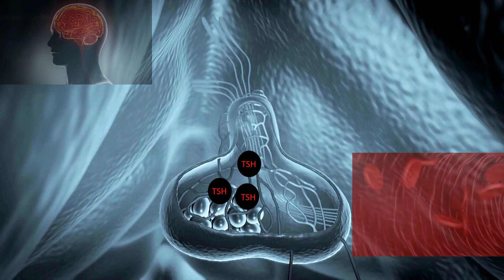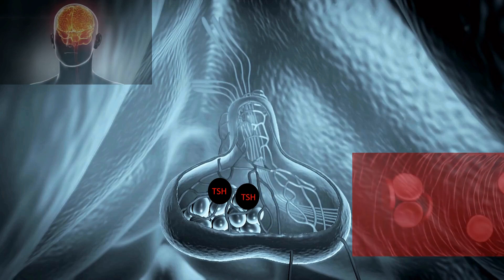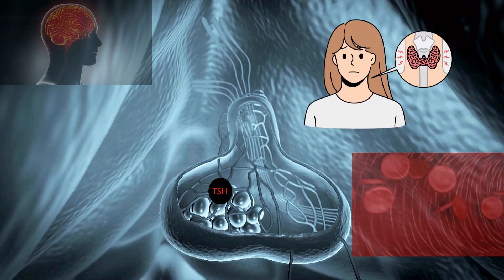TSH is a hormone produced by the pituitary gland in the brain that regulates the activity of the thyroid gland.